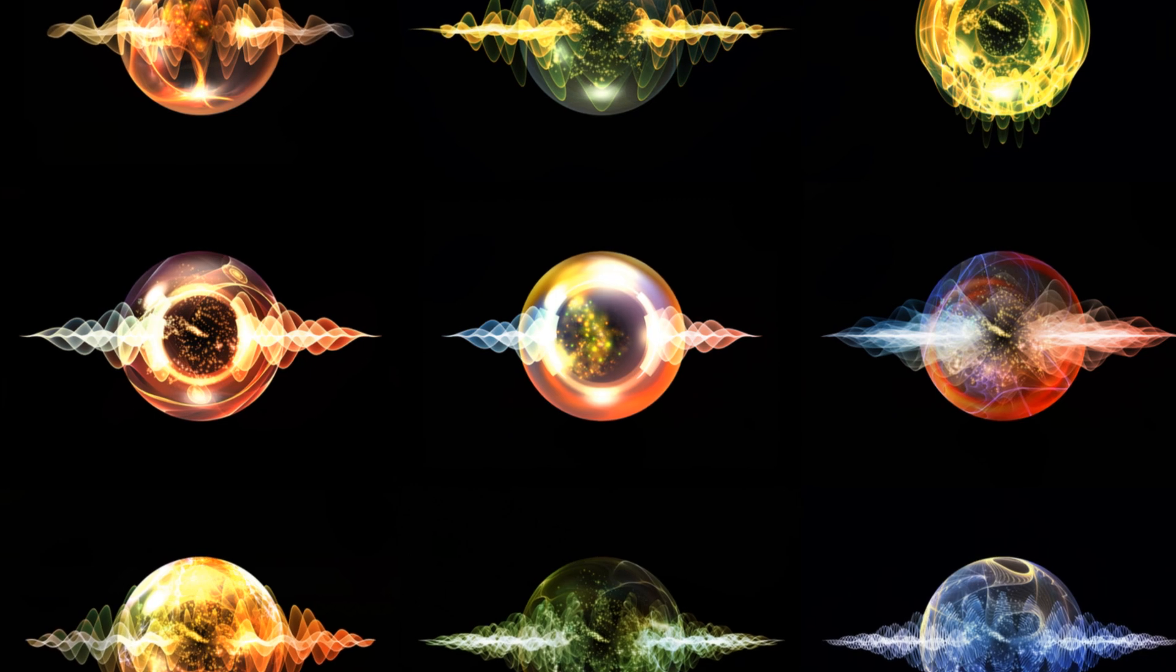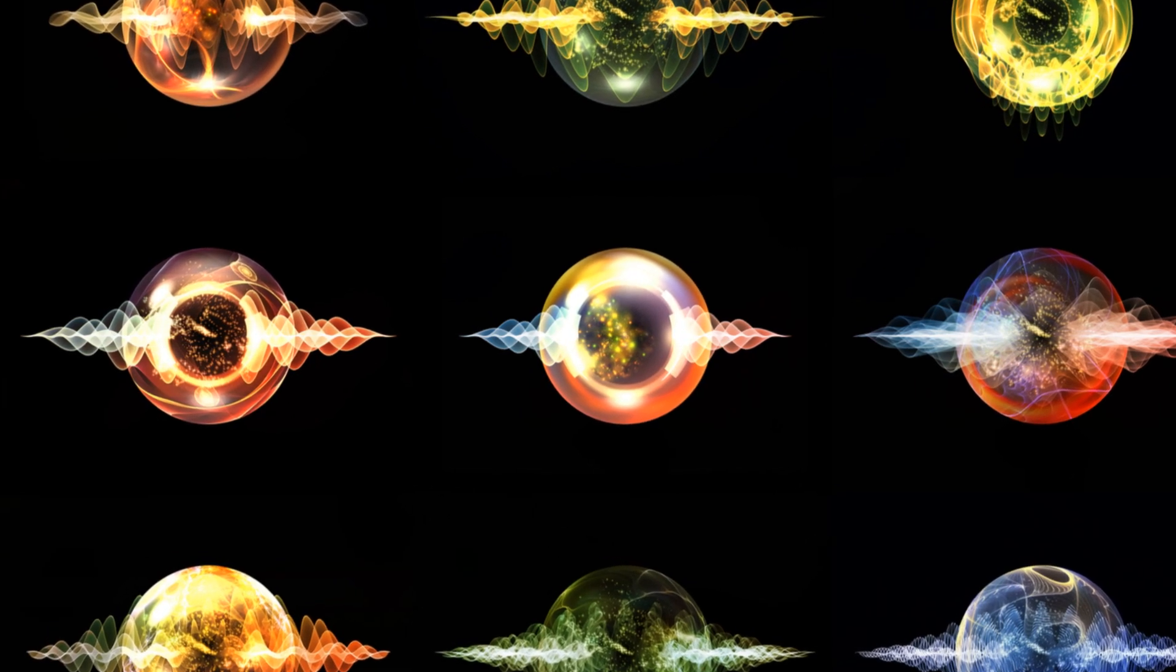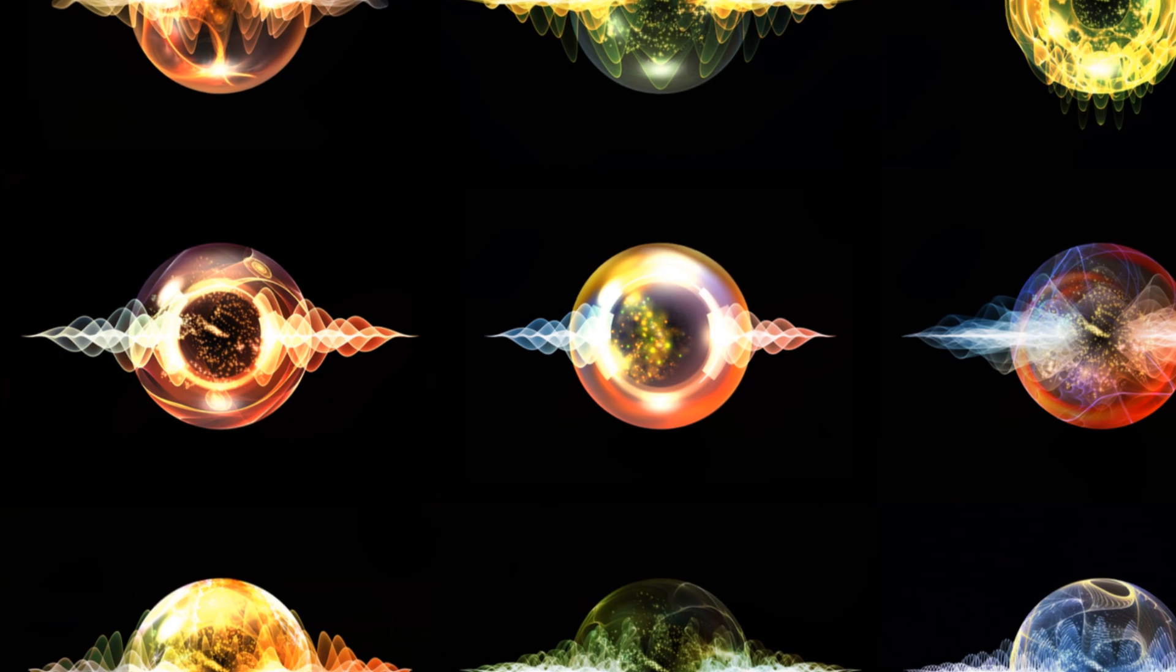Let's dive a bit deeper with eigenstates. These are specific, definite states of our system. Smooth and rough are eigenstates, specific and definite states of our orb. They represent the pure states that the orb can be in.